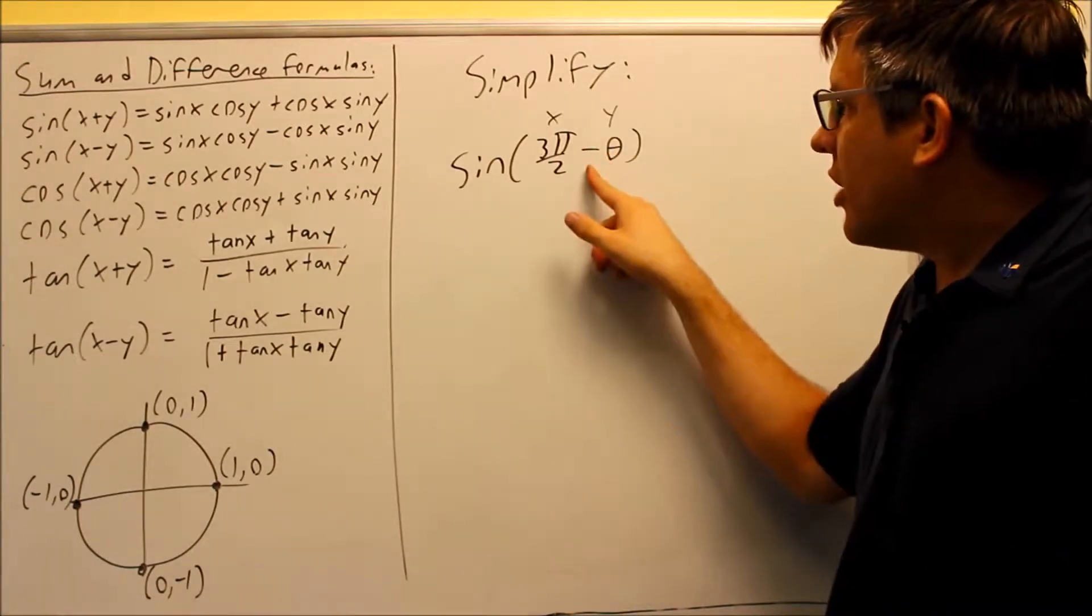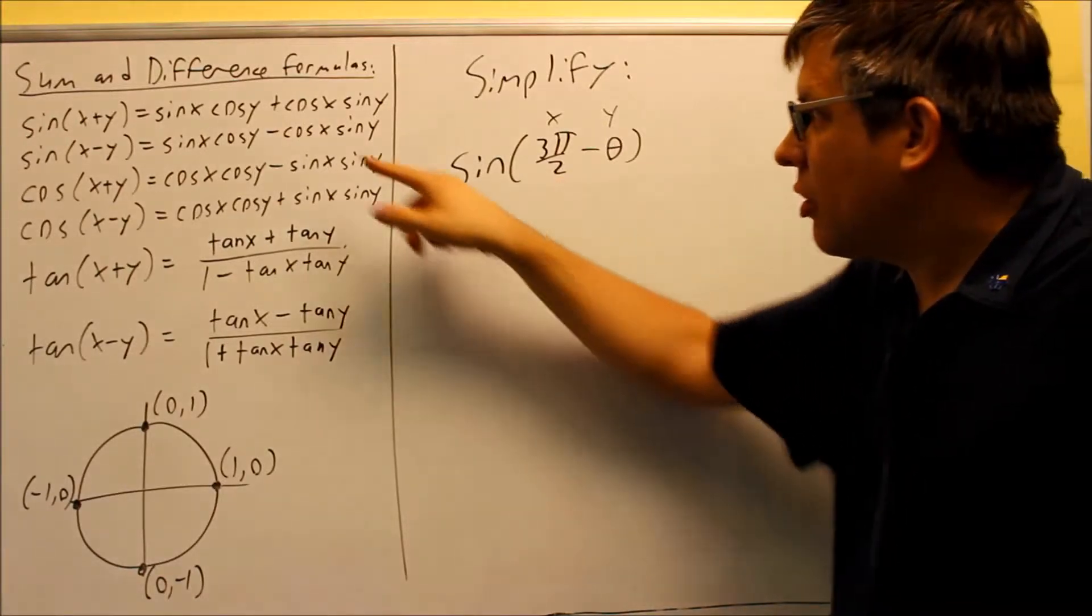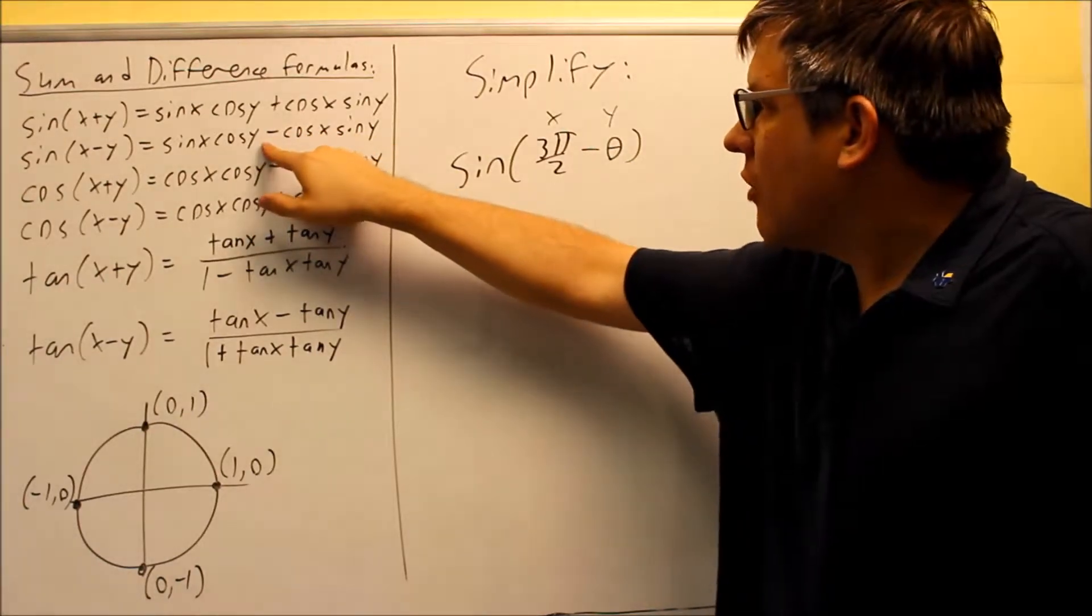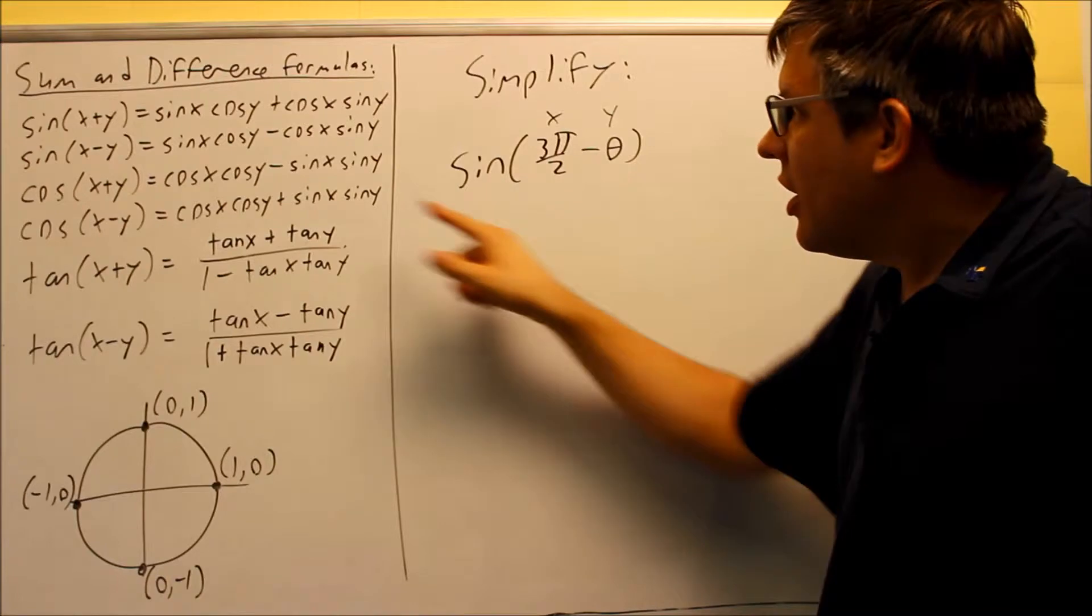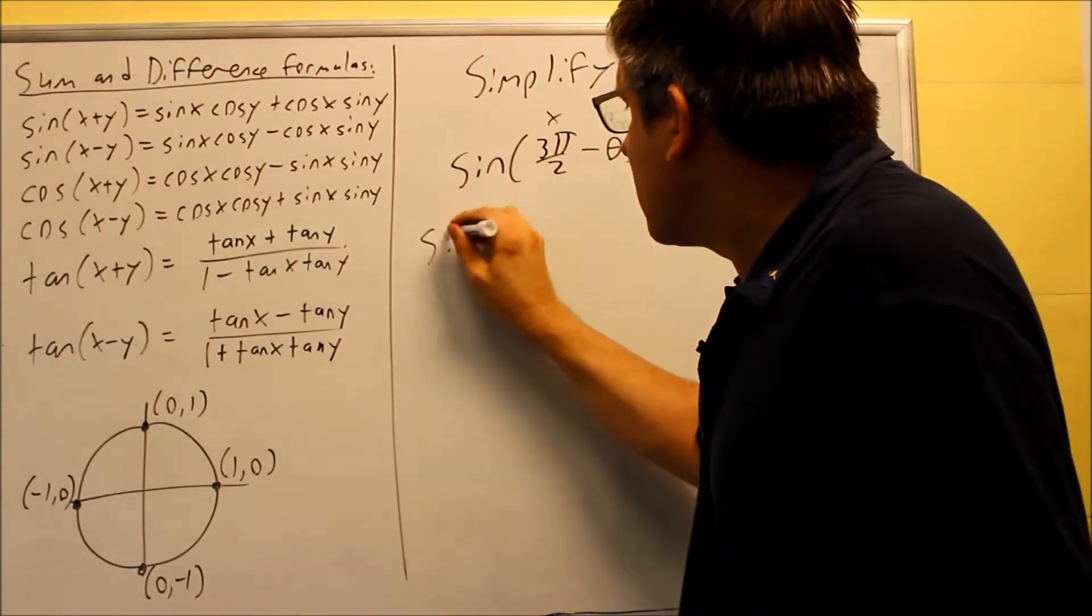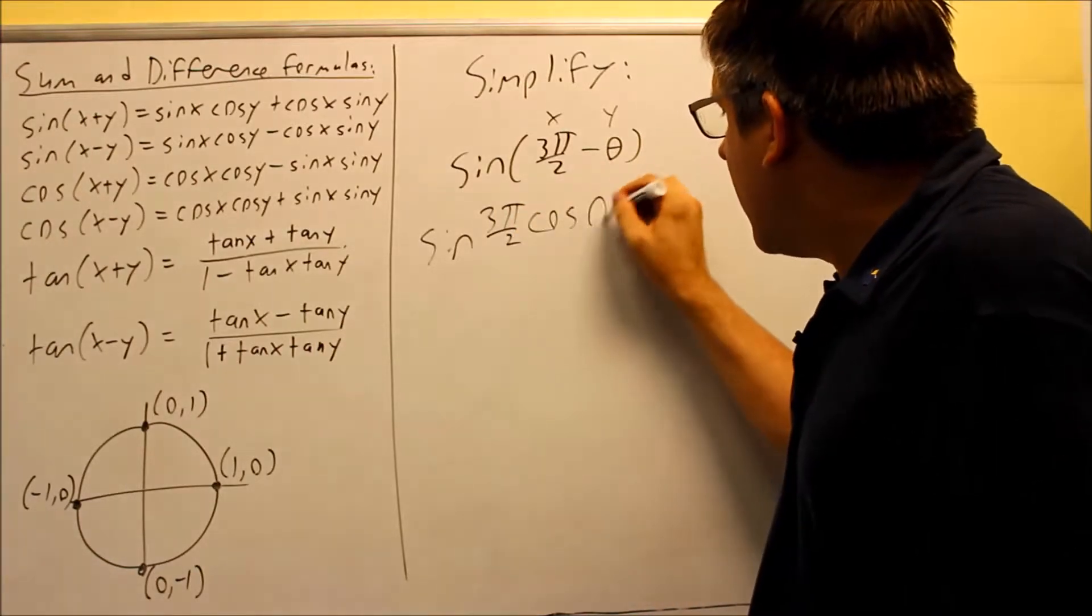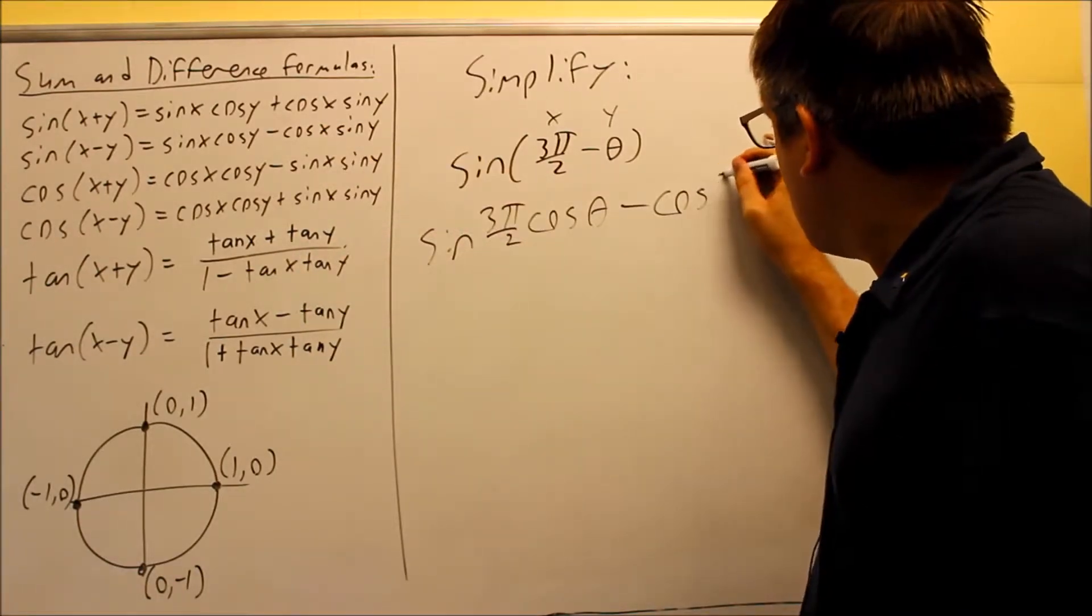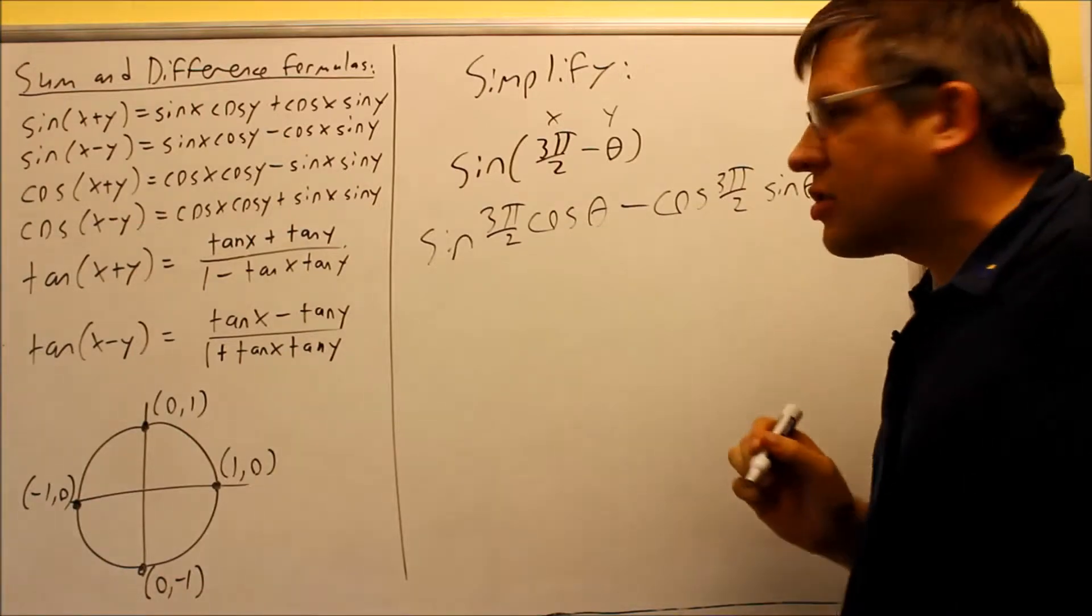Whenever you have a minus sign, the one that comes in front of the minus must always be your x. That's the only way the formula is going to work. So the idea here is I'm going to use the second formula because I notice I have a sine with two things being subtracted. And I'm just going to expand all that out based on this. So that means I'm going to do sine of x, and x here is 3π/2, and then I have cosine y, that's our theta. And then we're going to do minus cosine 3π/2, and then sine y, which is going to be our sine theta.